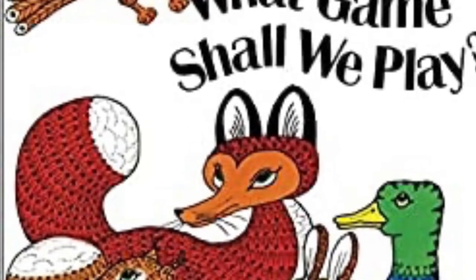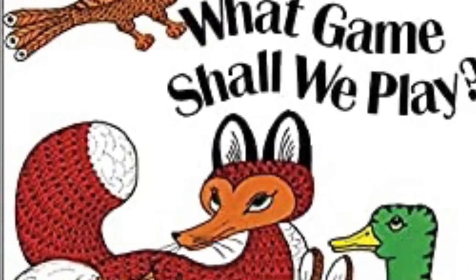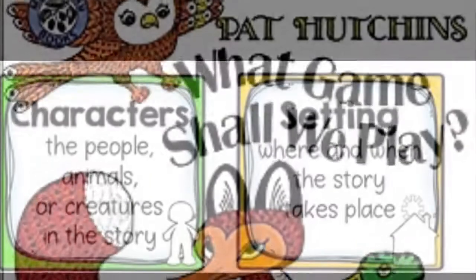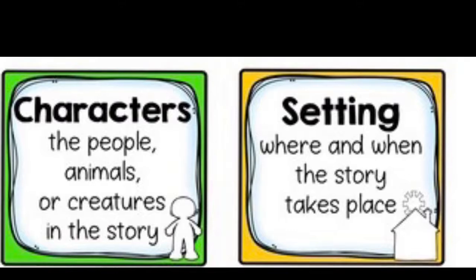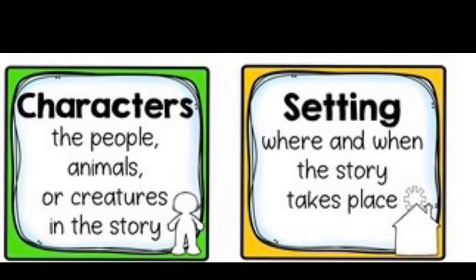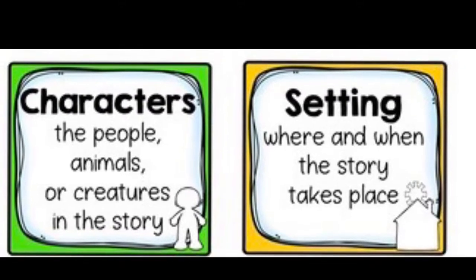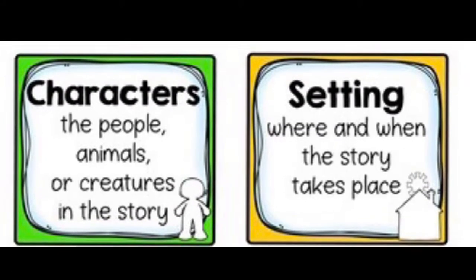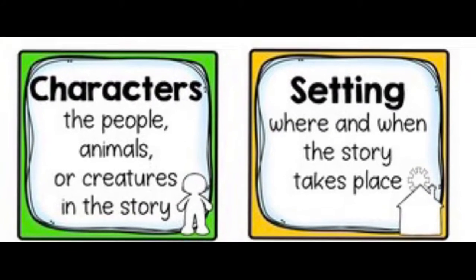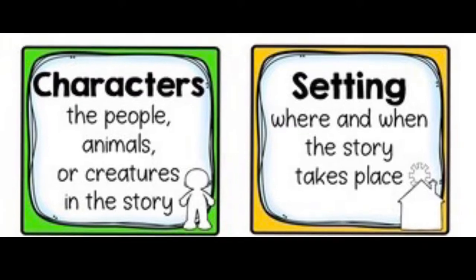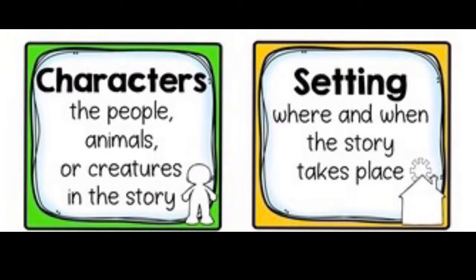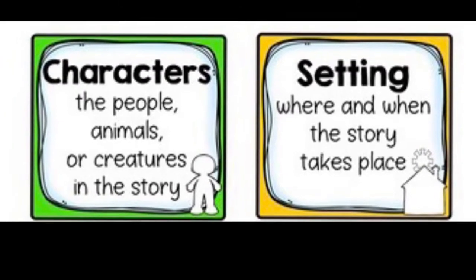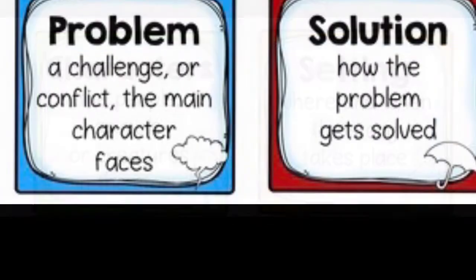Today I'm going to read a story called What Game Shall We Play by Pat Hutchins. This week we're talking about story structure — the characters and setting. The characters are the people, animals, or creatures in the story. The setting is where and when the story takes place.